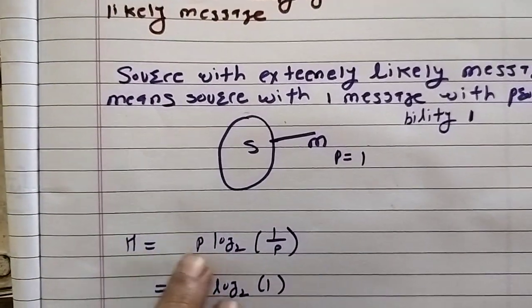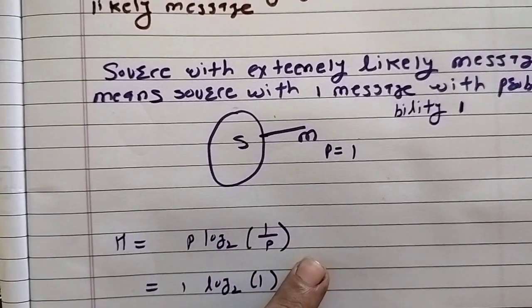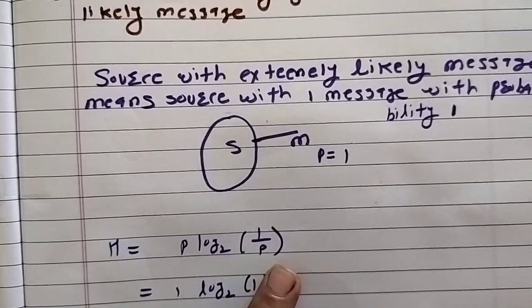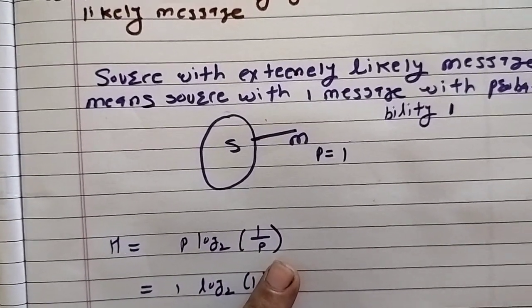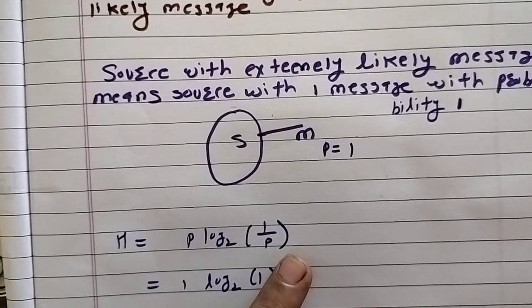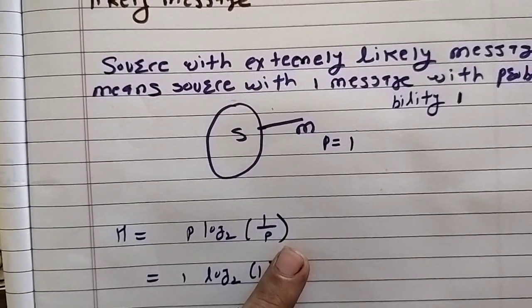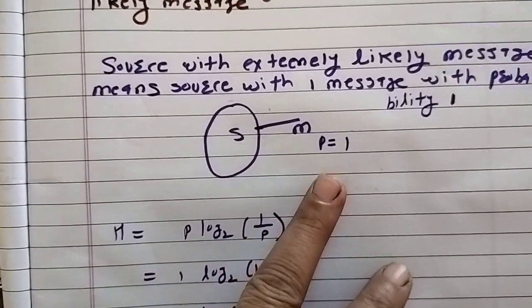Now, let us find the entropy. H is equal to p log base 2 of 1 by p, because there is only one message. Otherwise we could have used the summation sign, but there is no need to use the summation sign because there is only one message.